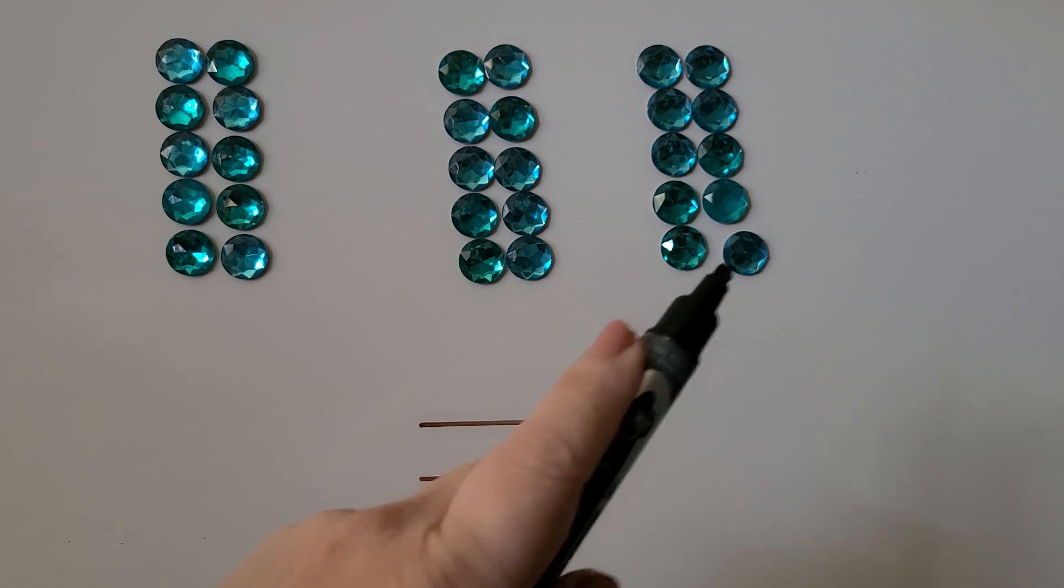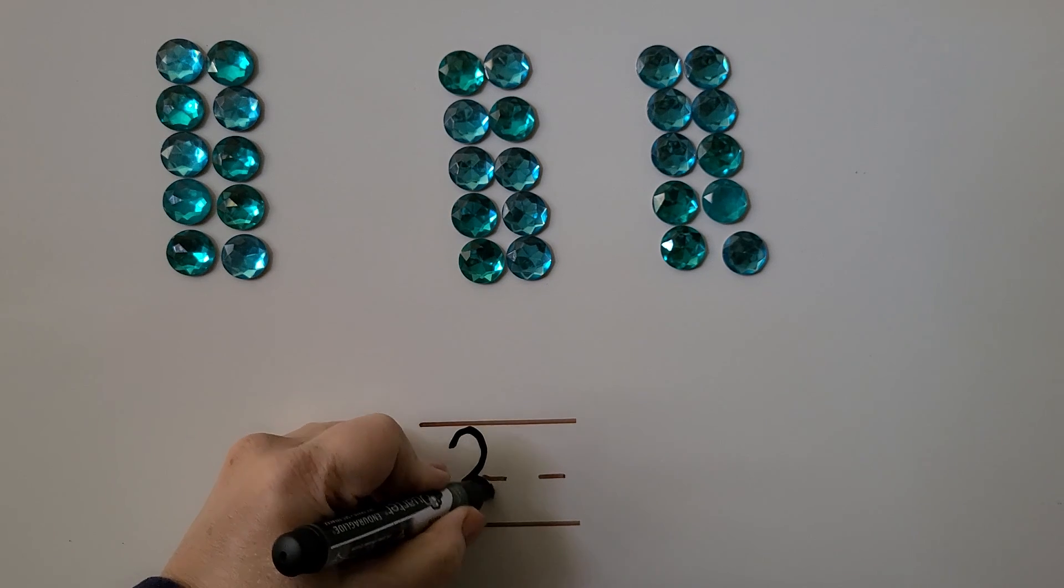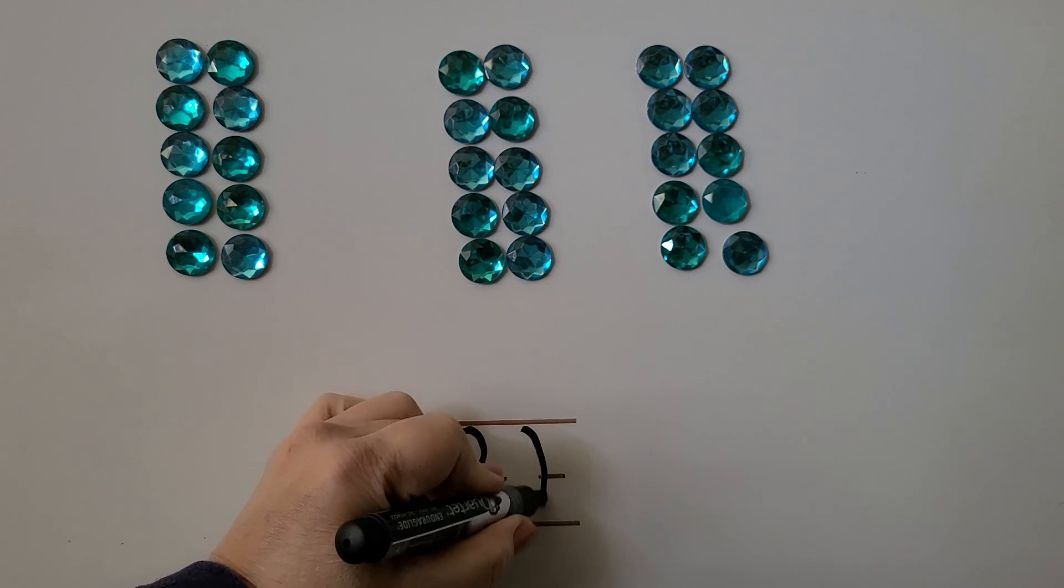We can skip count: 10, 20, 30. We know there are 30 because we put them into groups of 10 and skip counted by tens.